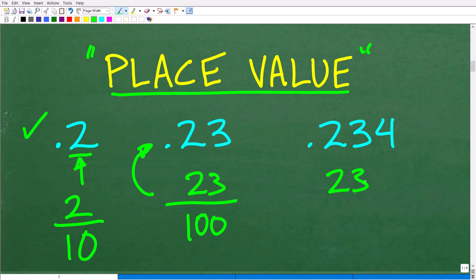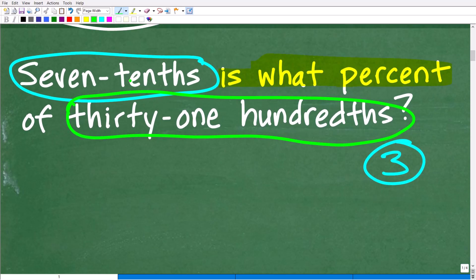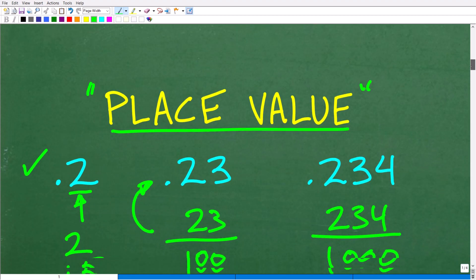So we can express this particular decimal not as point two three four, which of course it is, but 234 thousandths. So two, three, four over 1,000. All right, so that's what we're going to have to do. We're going to have to be able to understand place value and interpret these words here, seven tenths, as either a decimal or a fraction. So let's go ahead and do that right now.